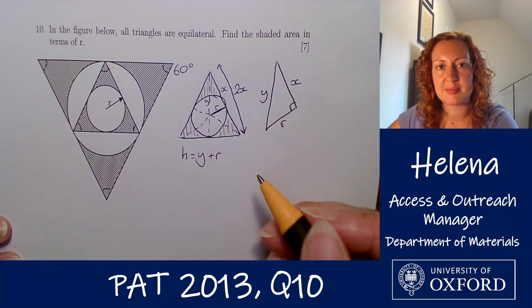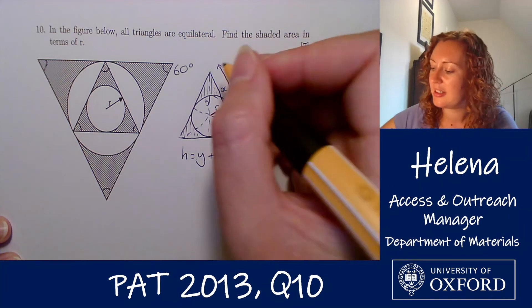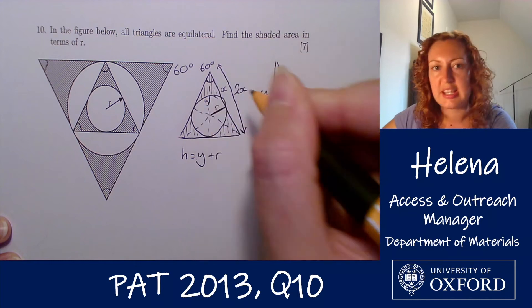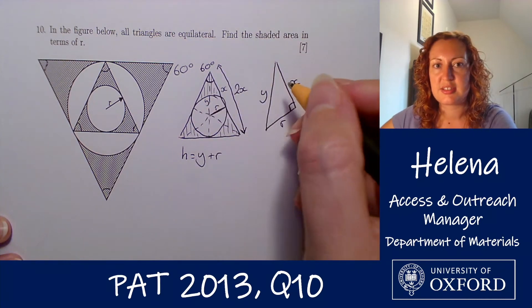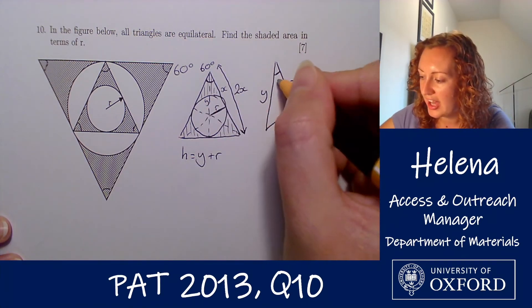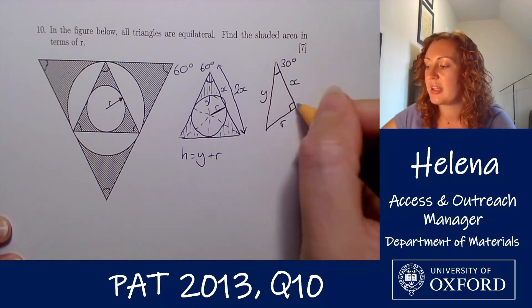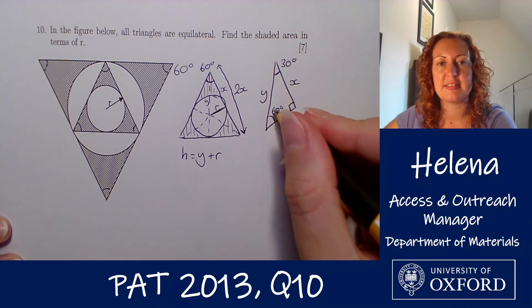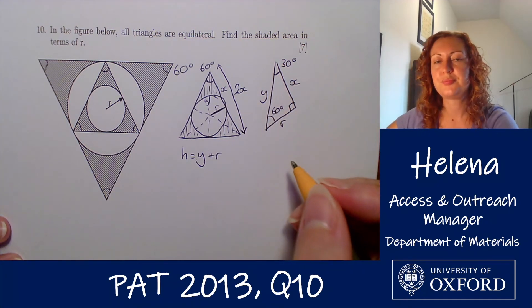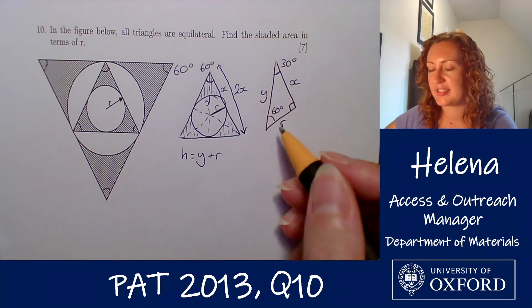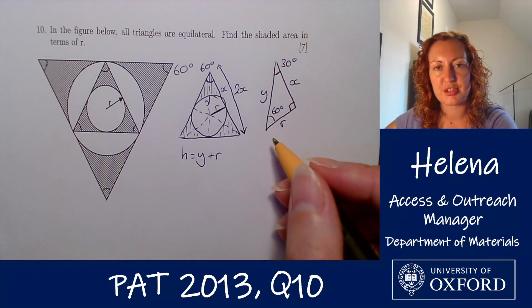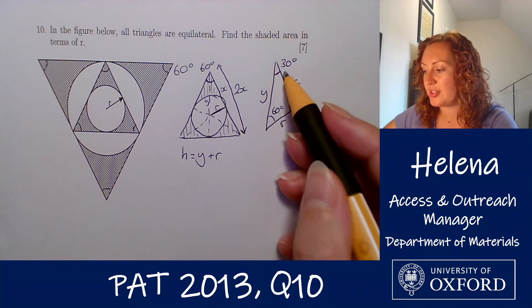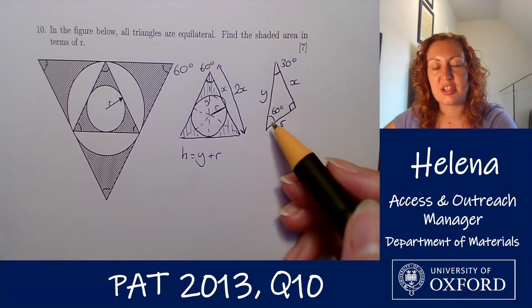Let's have a think about some of the angles. Because these are equilateral triangles, we know that this angle here is 60 degrees. So this angle at the top must be half of that, which is 30 degrees, and then because they have to sum to 180 we know that this one is 60 degrees. There are a few ways you could go about this — you could focus on the 30 degree angle or the 60 degree angle.